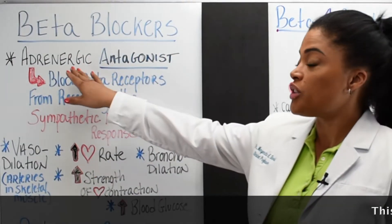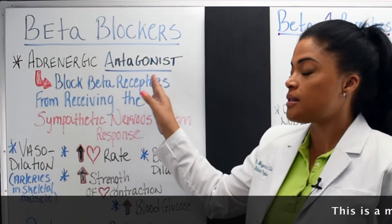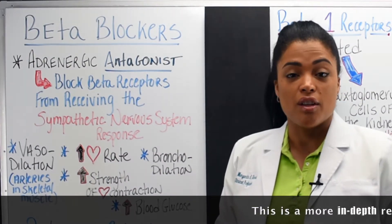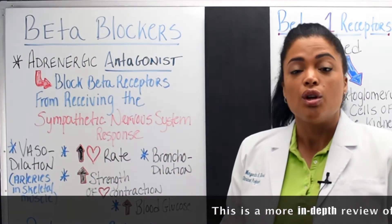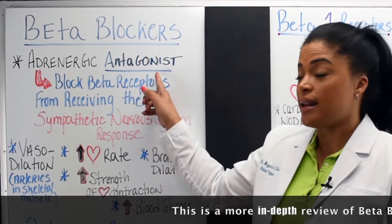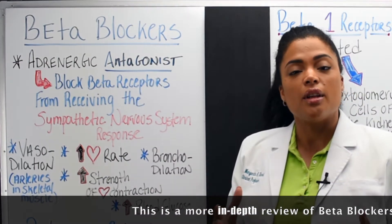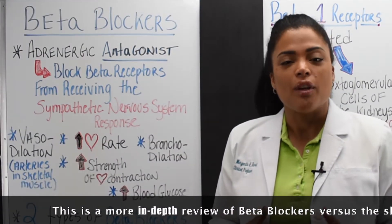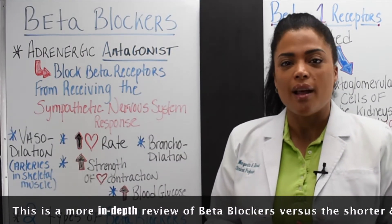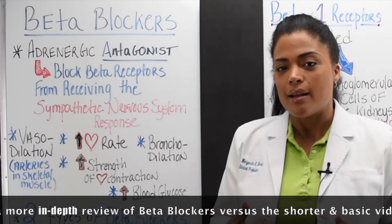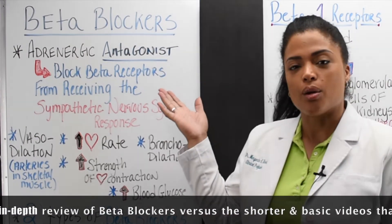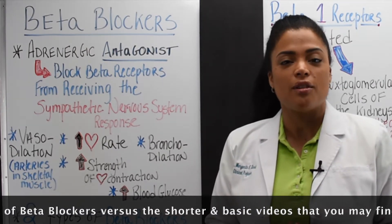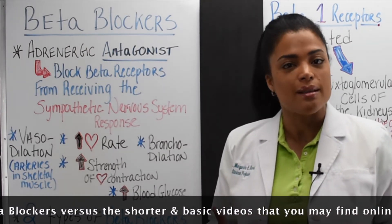Beta blockers are called adrenergic antagonists. If you saw the alpha and beta receptor video in this channel, DrRegisteredNurse, you will know that the word antagonist means that it's going to go against a normal response. For example, if somebody's heart rate is supposed to be elevated, a medication that's considered an antagonist, such as a beta blocker, is going to lower that heart rate — giving the opposite effect of what the normal response is.